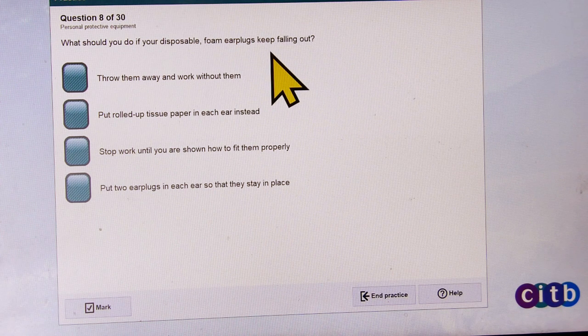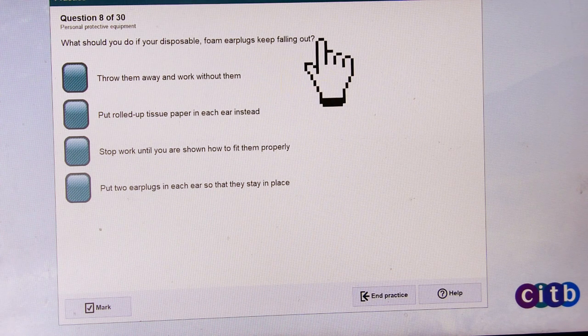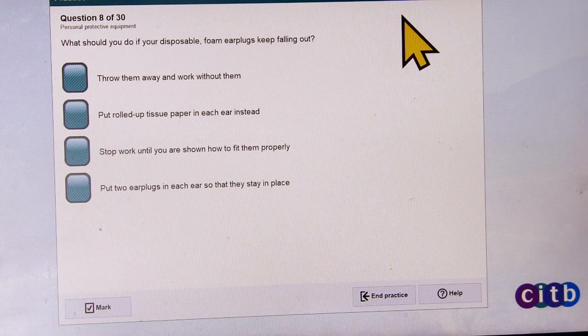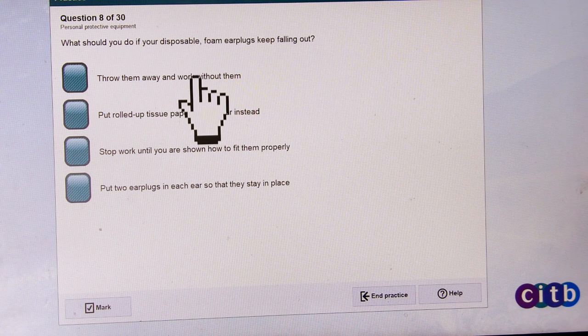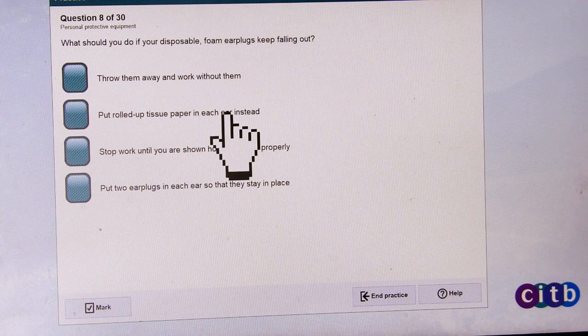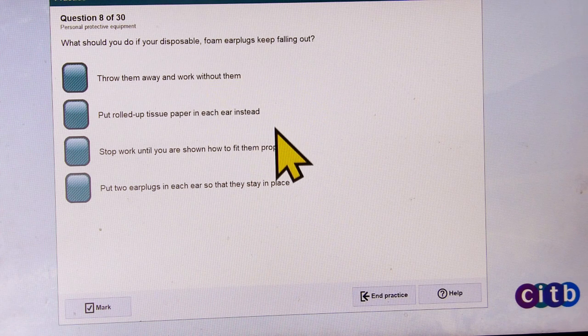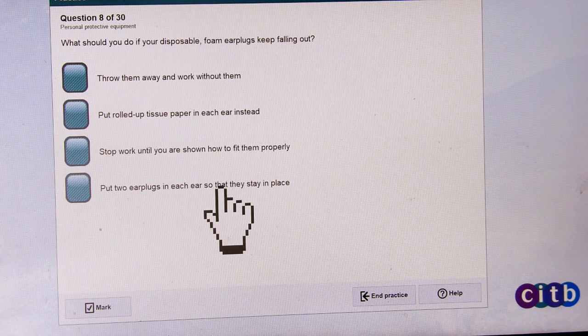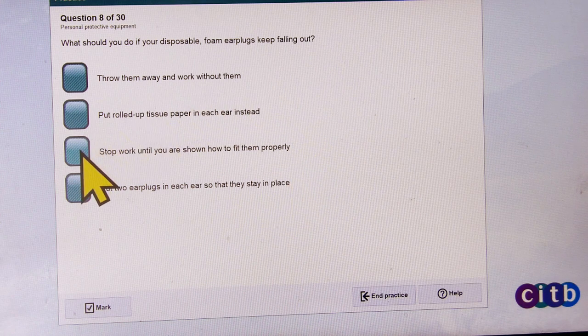What should you do if your disposable foam earplugs keep falling out? Throw them away and work without them, put rolled up tissue paper in each ear instead, stop work until you are shown how to fit them properly, or put two earplugs in each ear so that they stay in place?